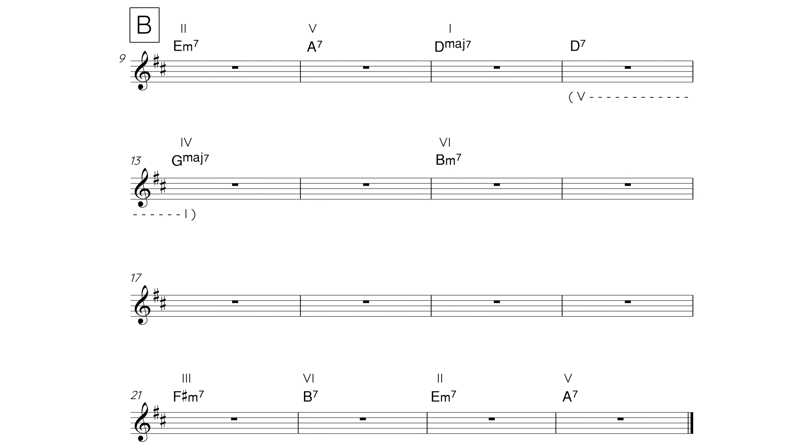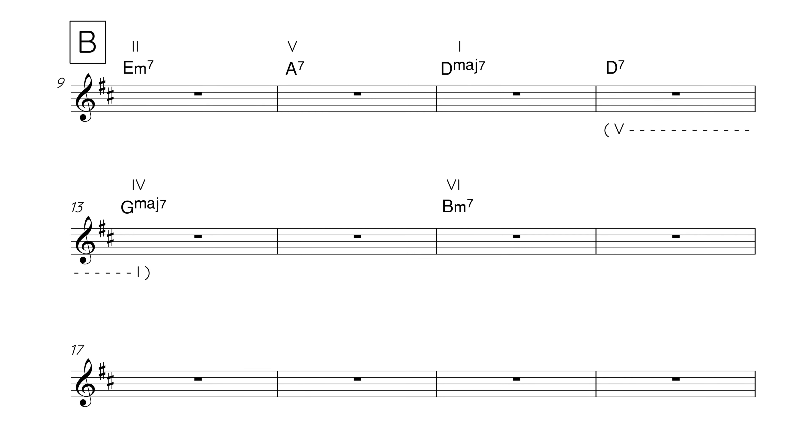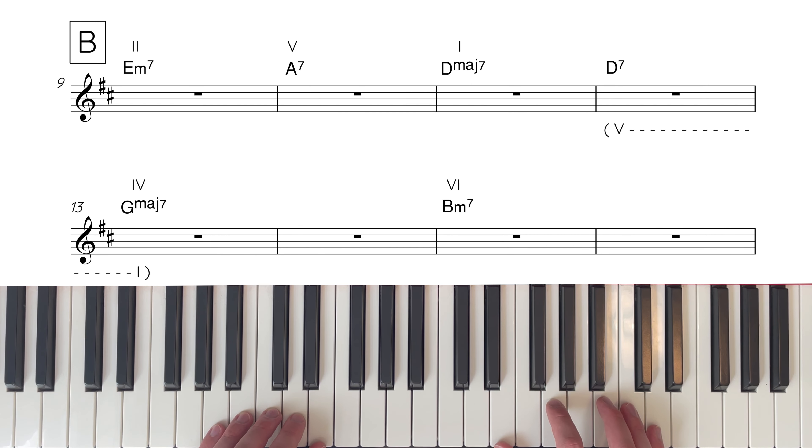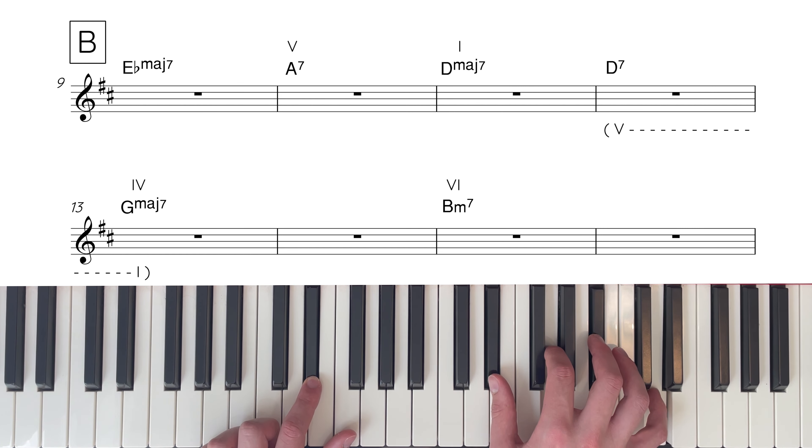The last four bars are made up of a 3-6-2-5 progression, which doesn't resolve to chord 1, and instead takes us back to the A section vamp. Chord 3 is F sharp minor 7, chord 6 is B7, chord 2 is E minor 7, and chord 5 is A7. Great, so that's the foundation harmony. Now let's hear it on the piano.